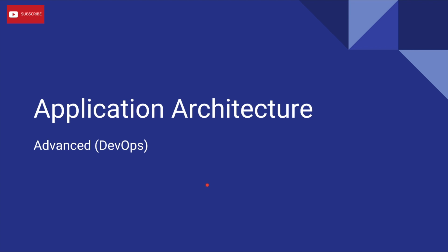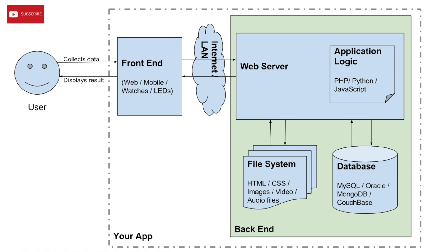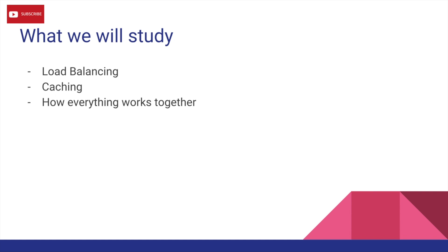Hello everyone, this is Rajat from renostudios.com. In my previous video I explained how a basic web application is architected — how data gets collected from the front end, goes to the web server, then through the application logic, gets stored to the database, and how the front end shows you images via the web server. I'd request you to check that video out prior to starting this one. In this video I want to talk about load balancing and caching.